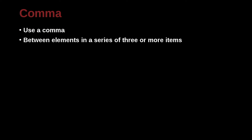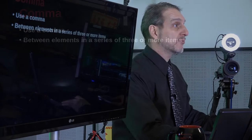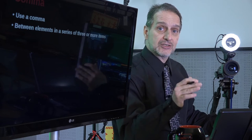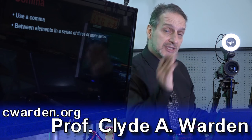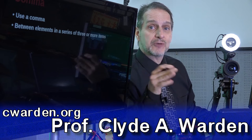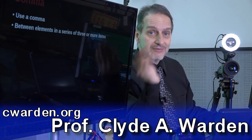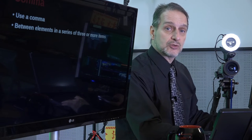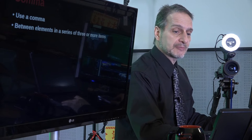Let's take a look at commas now. In the case of commas, use commas between elements in a series of three or more items — that is a list. So first we did A, B, C, and finally we did D. A series like that is where you use a comma very typically.